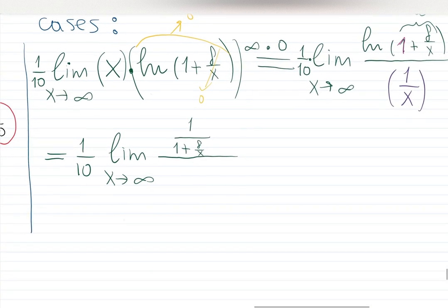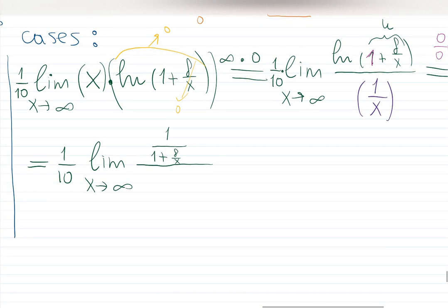Let me zoom in. Now chain rule, don't forget. Times the derivative of the function inside. What is the derivative of 1 plus 8 over x? It will be 0 minus 8 over x squared. Do it slowly right now if you want to check if this is the case.